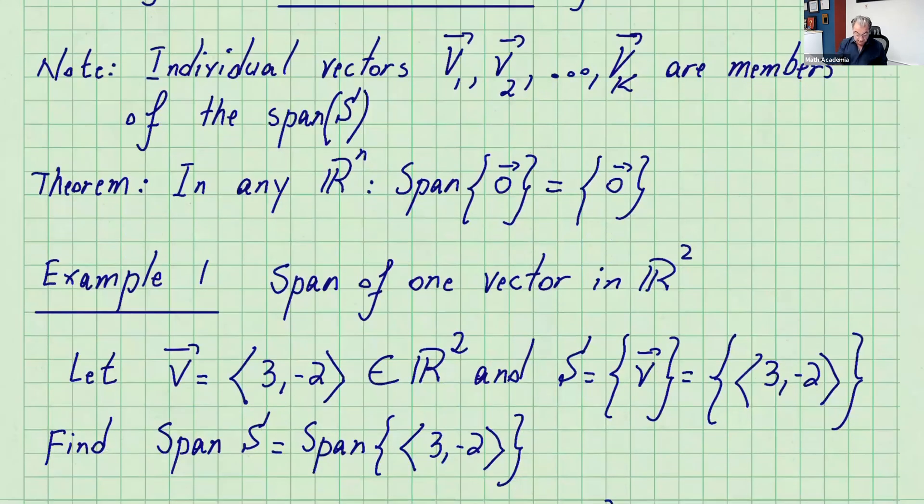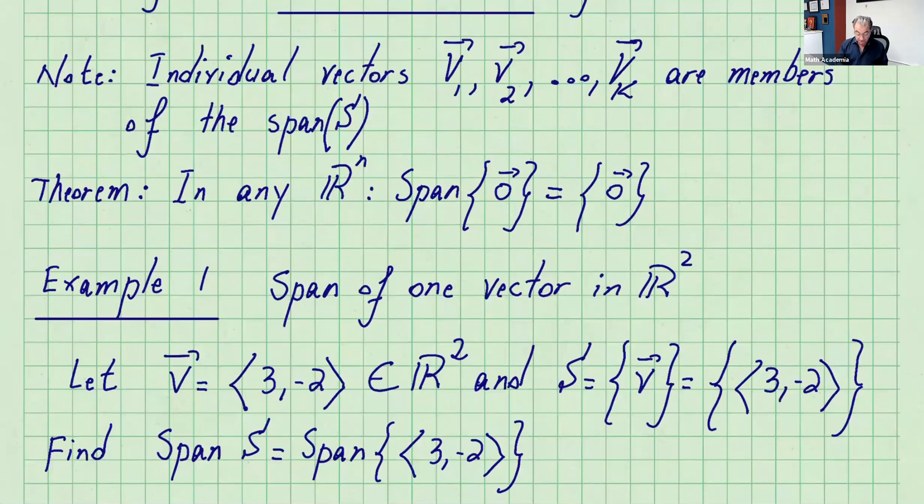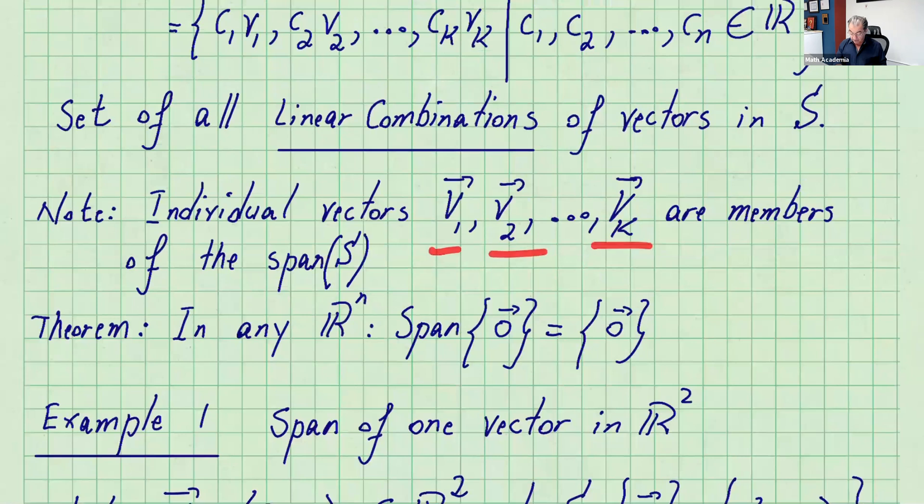Now there's a note here. The individual vectors v1, v2, ..., vk are members of the span of S. If you're in Rn, the span of the zero vector is just the zero vector. Any number times zero is going to be zero.